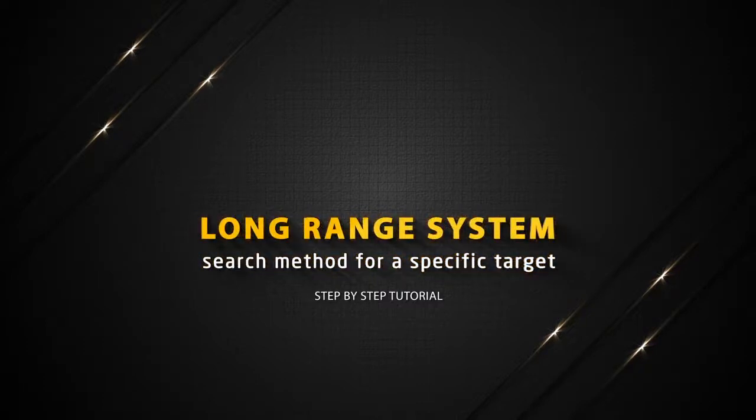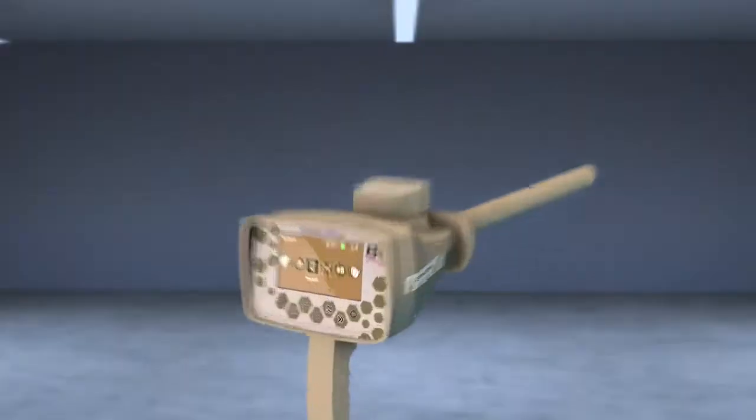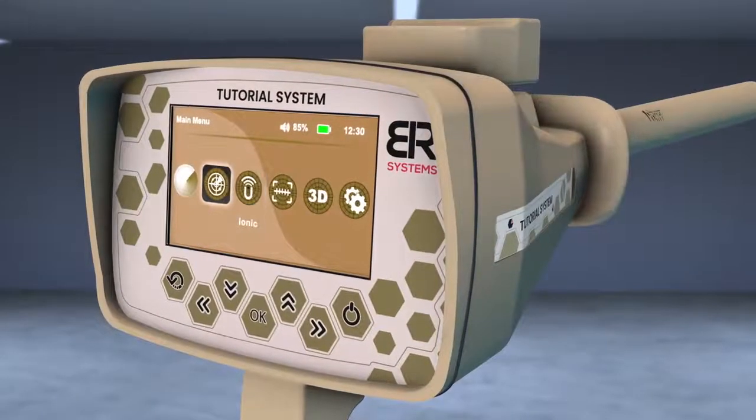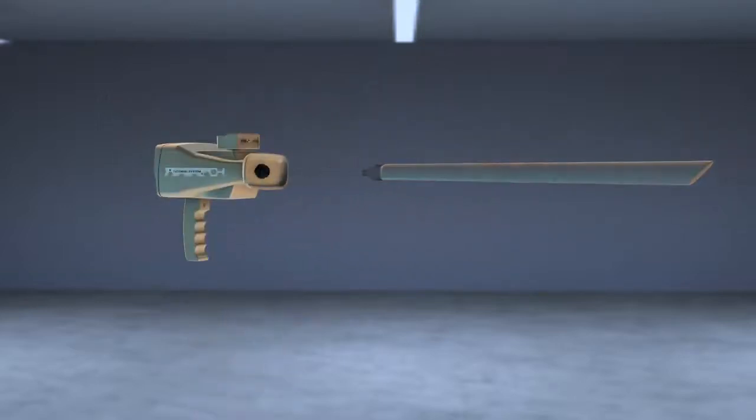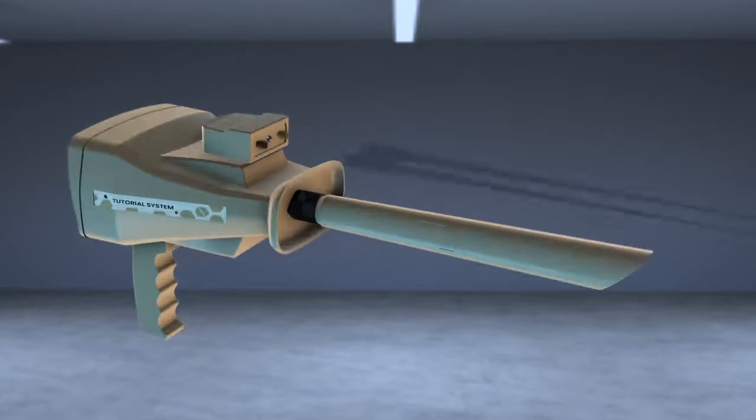Long Range System Search Method for a Specific Target. Turn on the device, then choose the Long Range icon from the main screen. Install the PowerMax 25 sensor at the designated entrance. Tighten the clamp well and then install the antennas in its place.